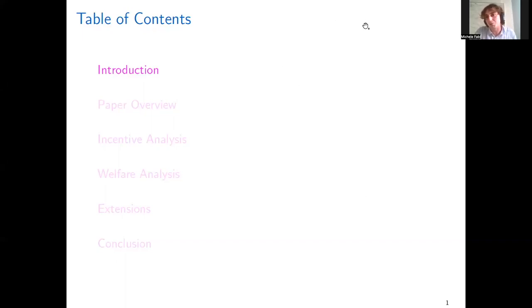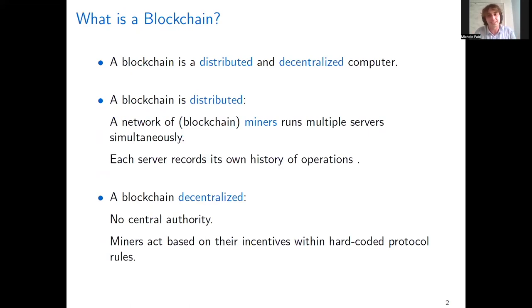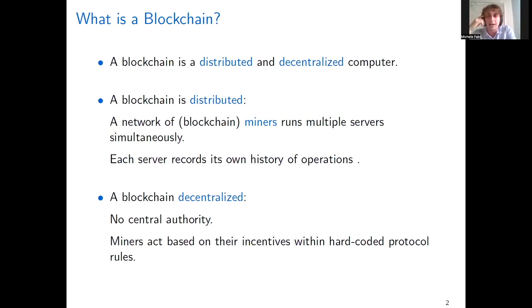So let's start with the introduction. I will talk about things that maybe for some of you are kind of obvious because they are just basic things about blockchain, but since I'm on the job market and maybe there are people that don't know, I will do it anyway. So what is a blockchain? I would say that a blockchain is a distributed and decentralized computer. In what sense is it distributed? Because it's a multi-server computer — there is not just one agent that can control what's in the memory of the computer, like a bank or a firm. The memory is maintained and stored by a network of miners which run multiple servers. These entities — miners, nodes, validators — have many names, but originally they were called miners.